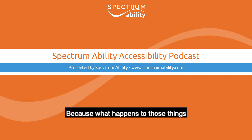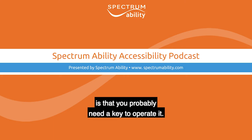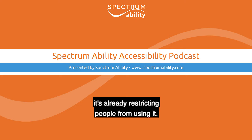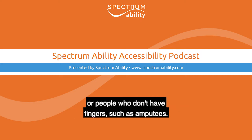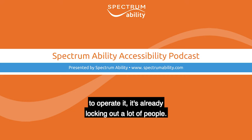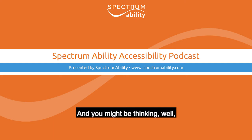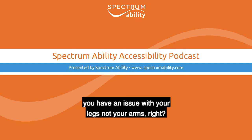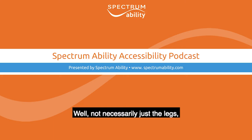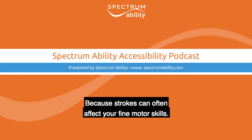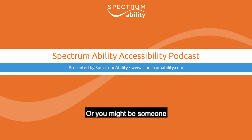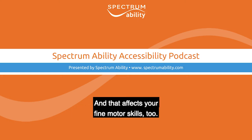Going back to the definition — a platform lift looks usable by all people, but is it? You probably need a key to operate it, and if you don't have a key, you can't use it. A key can be an issue for people who don't have finger function, such as amputees. And many wheelchair users have finger dexterity issues from spinal cord injuries, strokes that affect fine motor skills, or conditions like cerebral palsy. So this platform lift is already locking out a lot of people.